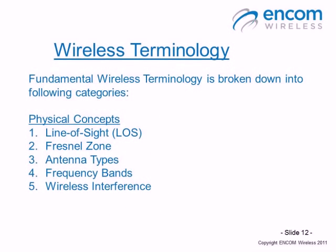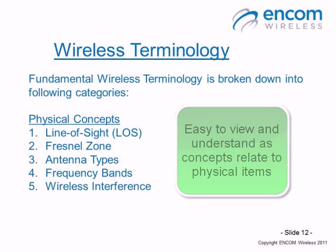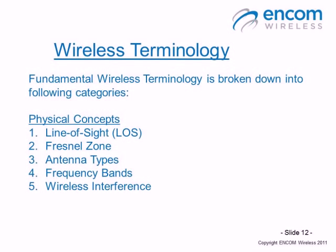The next section covers fundamental wireless terminology, broken down into physical concepts. These five concepts are line of sight, Fresnel zone, antenna types, frequency bands, and wireless interference. The physical concepts are quite easy to understand, as they are something you can actually observe when out doing an installation with ENCOM broadband radios.